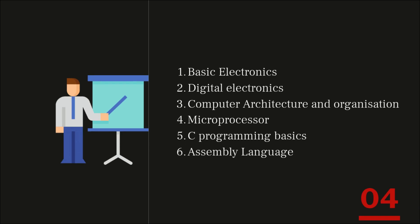Let's see what are the basic subjects that you can learn during your engineering, and what are the extra subjects we'll talk about in further videos of this series. As you can see in our list, we have six important subjects as prerequisites: number one is Basic Electronics, number two is Digital Electronics, number three is Computer Architecture and Organization, number four is Microprocessors, number five is C Programming Basics, and number six is Assembly Language.